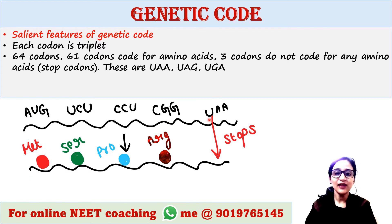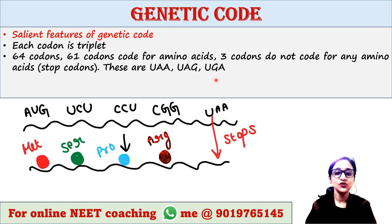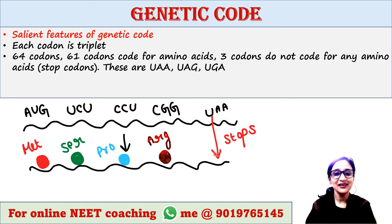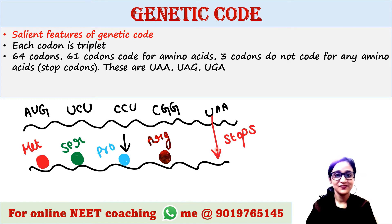At the end of the sequence, we have a stop codon — that is UAA. In this position, we can also have UAG or UGA. This stop codon does not add any more amino acids; it just stops protein synthesis further. That is why it is called the stop codon.